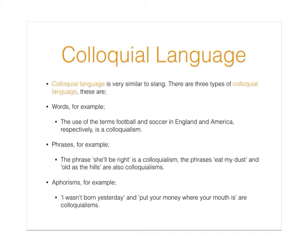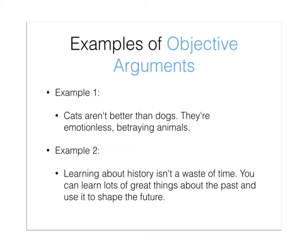The second type is phrases. For example, the phrase 'she'll be right' is a colloquialism. The phrases 'eat my dust' and 'old as the hills' are also colloquialisms. The third type is aphorisms. For example, 'I wasn't born yesterday' and 'put your money where your mouth is' are colloquialisms.